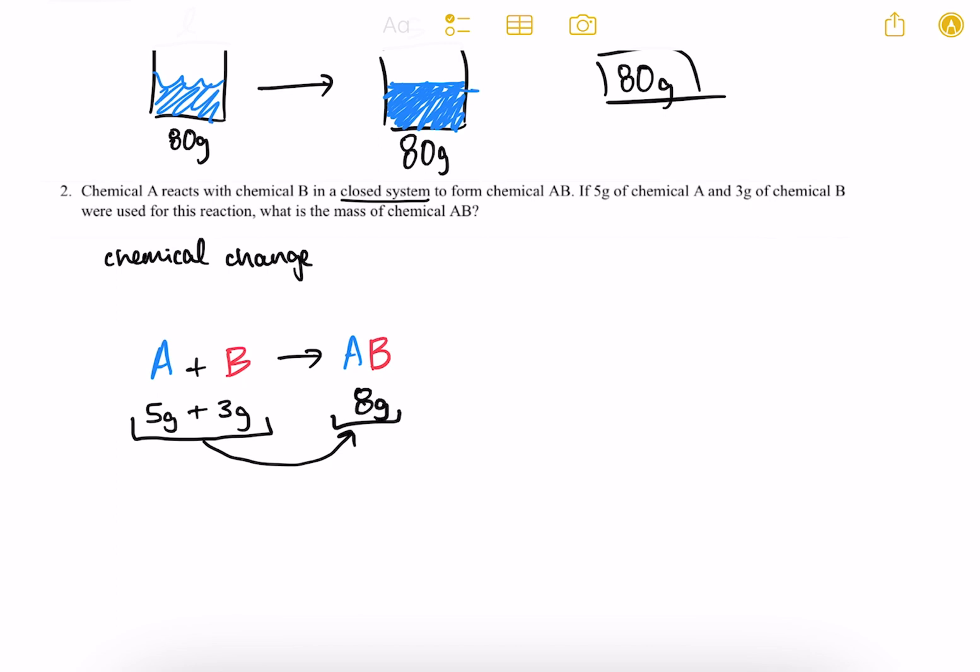Nothing has gone anywhere. It's a closed system. No matter has been lost. And so the combined mass of chemical A and chemical B will join together to give us the mass of chemical AB. So the answer to number two is eight grams.